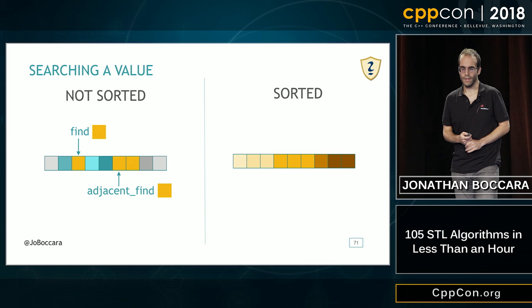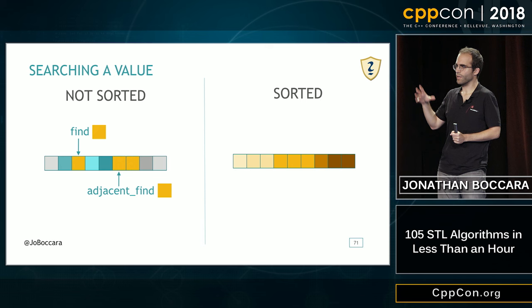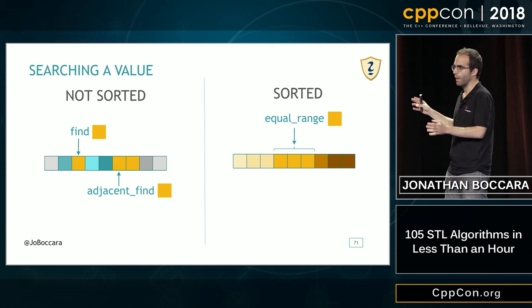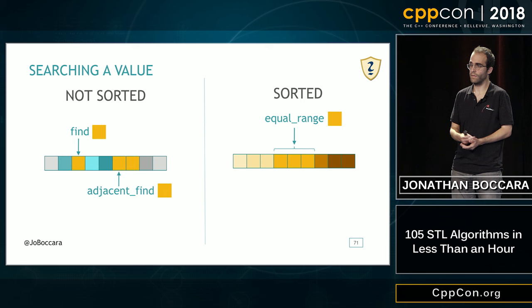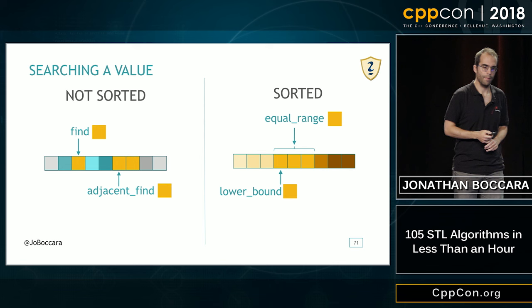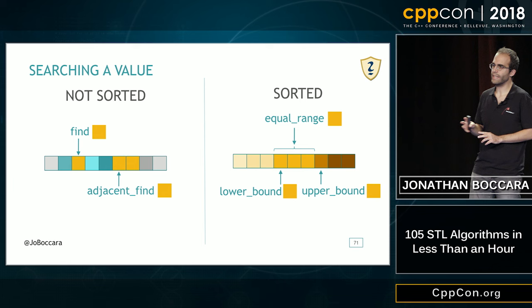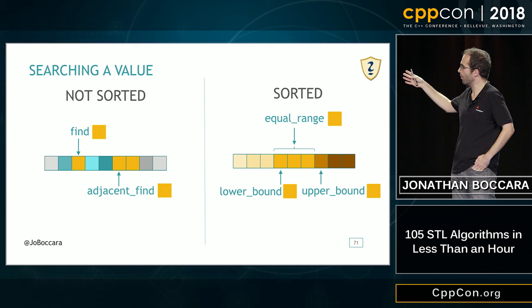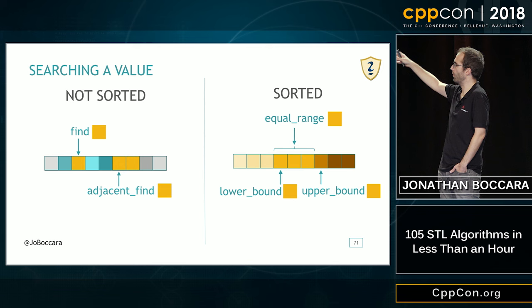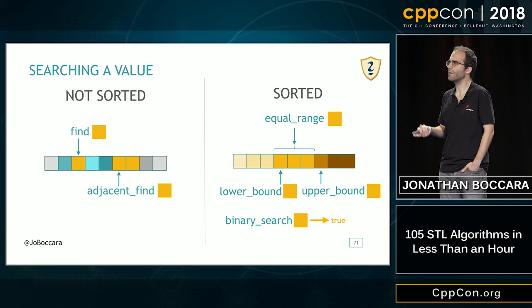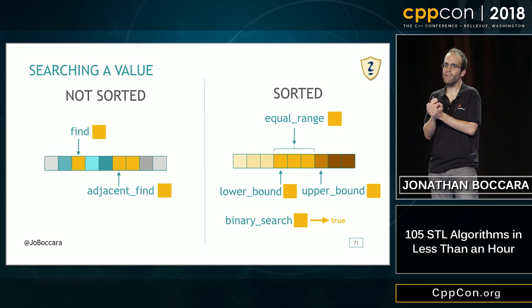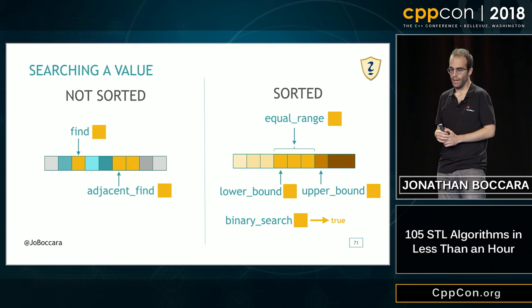On the sorted side, we're not really looking for a single value because equal values would be lumped together in a sub-range that could be empty if the value isn't there at all. That's what equal_range returns. There are also lower_bound and upper_bound, which indicate positions to insert elements — lower_bound to insert at the left of existing equal elements, upper_bound at the right. And there's binary_search, which returns a boolean — it tells you only whether the value is there or not, but not where it is.